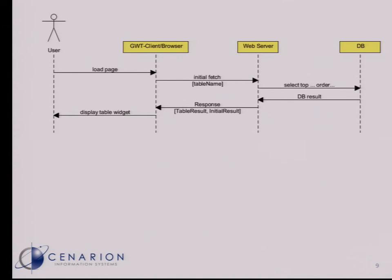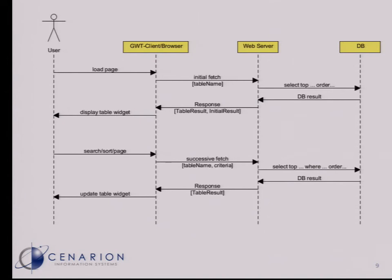The client is then able to display the result to the user. When the user does another call, he may enter some search data, sort data, or he wants to page through the table. We call this a successive fetch, and we send some criteria to the server. We add that to our database query so that we have a WHERE constraint. When we push back the data to the client, we no longer need the initial result metadata because the client already knows it. The client updates the widget and the user sees the result.